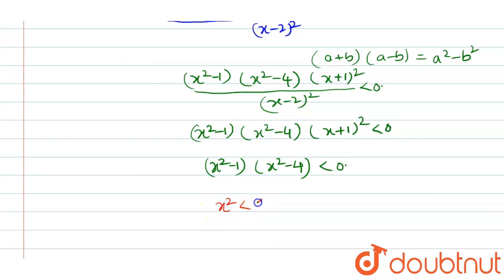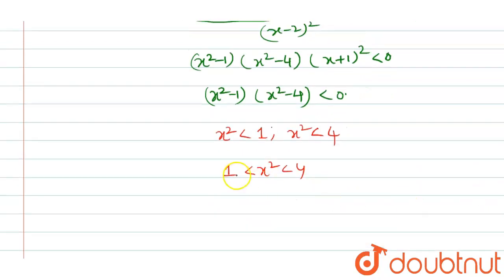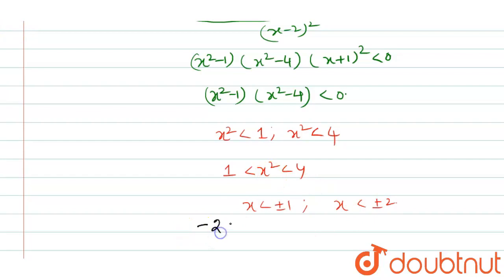Here x² < 1 and x² < 4. From these two conditions we write x² < 4 and x² < 1, giving the value of x as -1 < x < 1 and -2 < x < 2. From these two steps, the value of x lies between: -2 < x < -1 and 1 < x < 2.